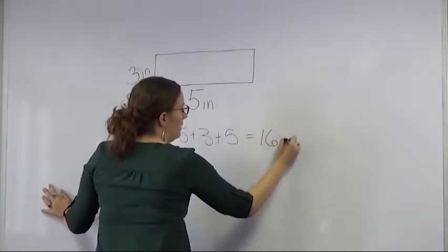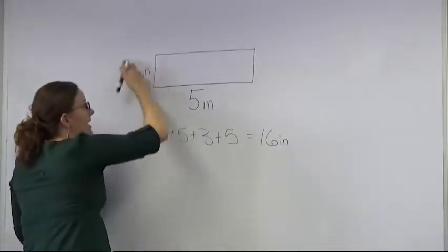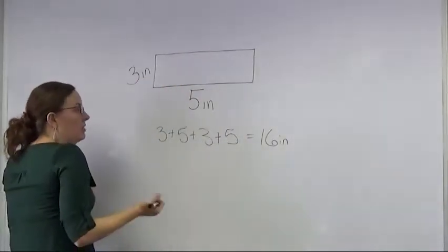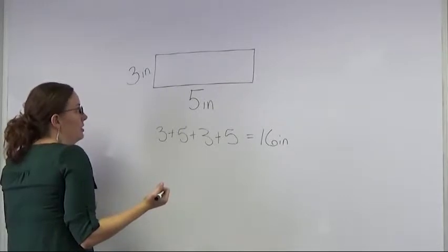It would only be in one dimension because we only added the outside. The perimeter is the outside of the shape, so the perimeter would be 16 inches.